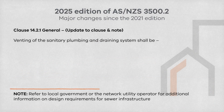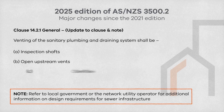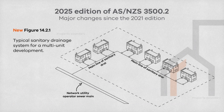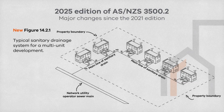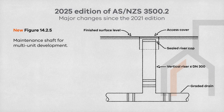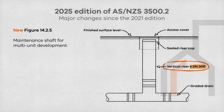Clause 14.2.1 has been updated to mandate that multi-unit developments must include inspection shafts, open upstream vents, and overflow relief gullies. A new figure illustrates a typical sanitary drain for multi-unit developments. Another new figure illustrates the maintenance shaft used in multi-unit developments, indicating that the shaft must provide ready access at ground level for drain clearing equipment and CCTV inspections, include a vertical riser with a diameter of no more than 300mm, and be fitted with a sealed riser cap and an access cover.